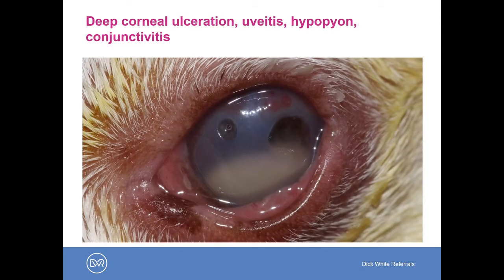Here we can see two very severe corneal ulcers. Dorsally on the left is a smaller ulcer approximately mid-stromal in depth, and to the right a much larger and deeper ulcer approximating Descemet's membrane — so this eye is at risk of perforation. There is dorsal corneal vascularization, conjunctivitis, and the white material ventrally is actually pus inside the anterior chamber — this eye has an intense uveitis with secondary hypopyon.